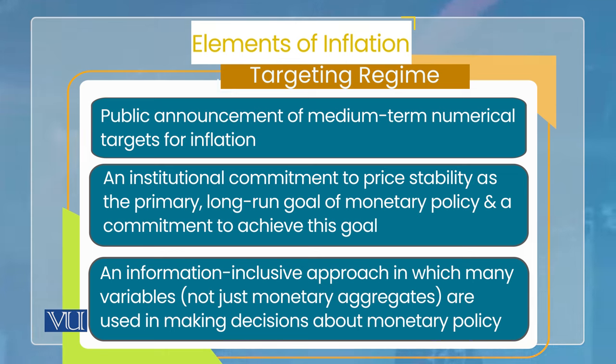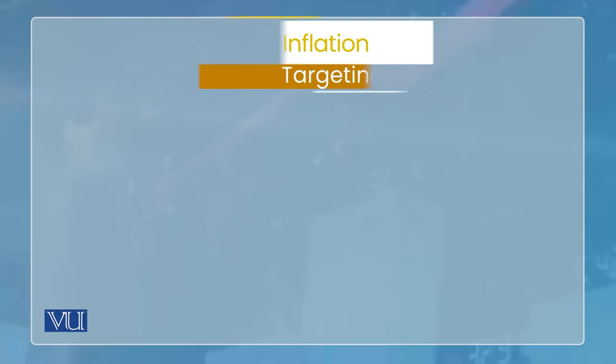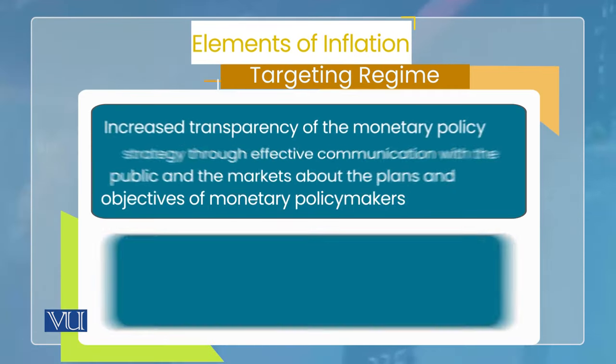تیسرا اہم element یہ ہے کہ یہ strategy کسی ایک variable پر focus نہیں کرتی — جیسے صرف money supply یا صرف long-term interest rate نہیں — بلکہ اس میں information-inclusive approach ہوتی ہے۔ Central bank medium-term inflation forecast کرتا ہے، اور اگر وہ forecast target سے deviate کرے تو policy change کی جاتی ہے۔ یہ forecast کسی ایک variable کی base پر نہیں بلکہ تمام relevant variables کو utilize کر کے کی جاتی ہے۔